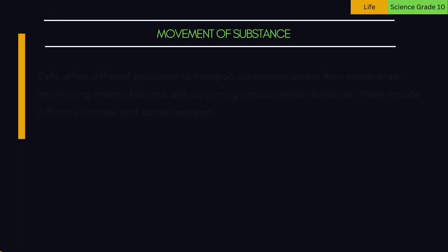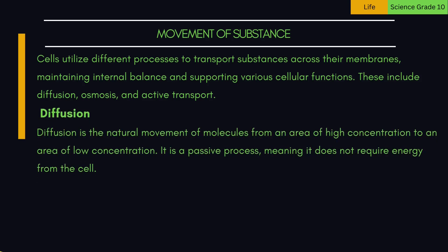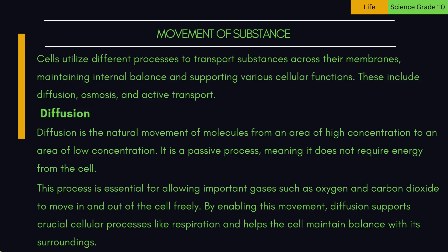Movement of substances: cells utilize different processes to transport substances across their membranes, maintaining internal balance and supporting various cellular functions. These include diffusion, osmosis, and active transport. 1. Diffusion — the natural movement of molecules from an area of high concentration to an area of low concentration. It is a passive process, meaning it does not require energy. This process allows important gases such as oxygen and carbon dioxide to move in and out of the cell freely, supporting cellular processes like respiration and helping the cell maintain balance with its surroundings.